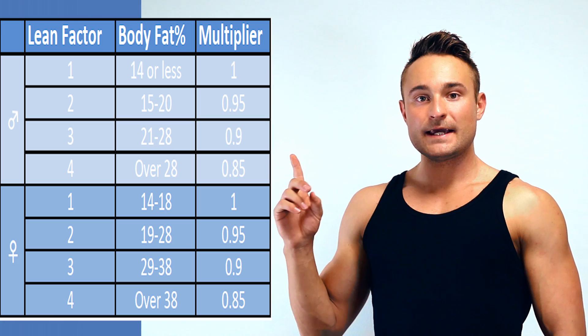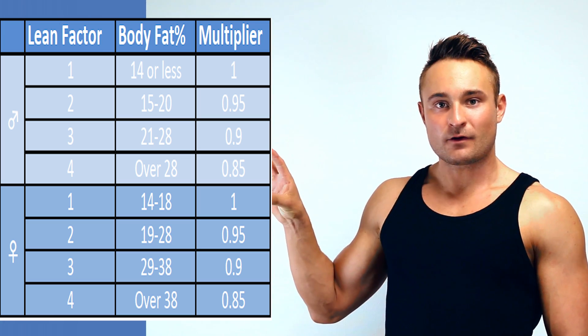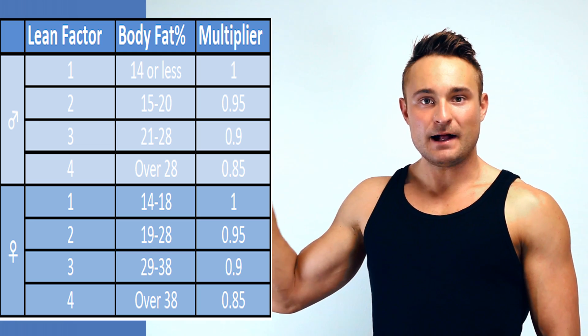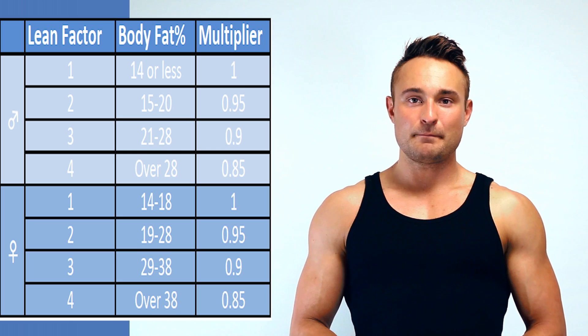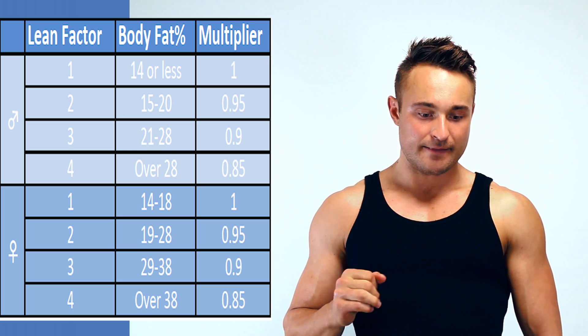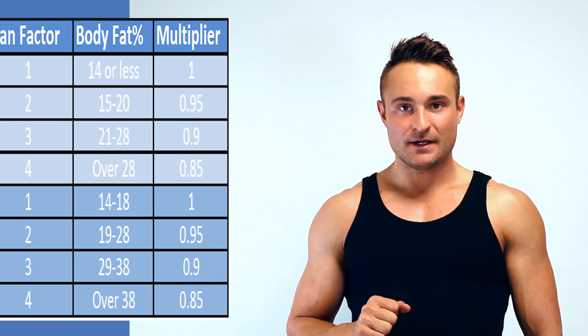The second step is to multiply your weight in kilograms by 24. If you're female, first multiply by 0.9 and then by 24. So a 91-kilo male would multiply by 24 to get 2,184 kilocalories. Now take a look at this chart and find your body fat range and the corresponding multiplier. Our 91-kilo male, with body fat from 15 to 20%, would multiply by 0.95 to get 2,057 kilocalories.